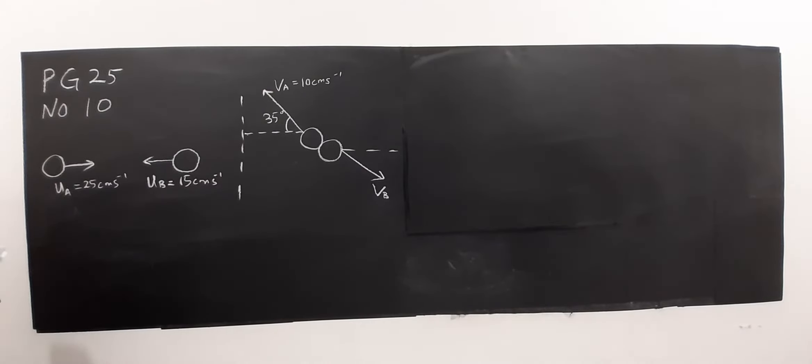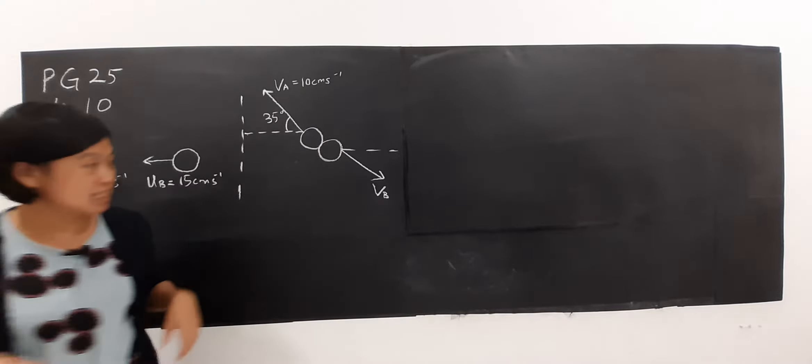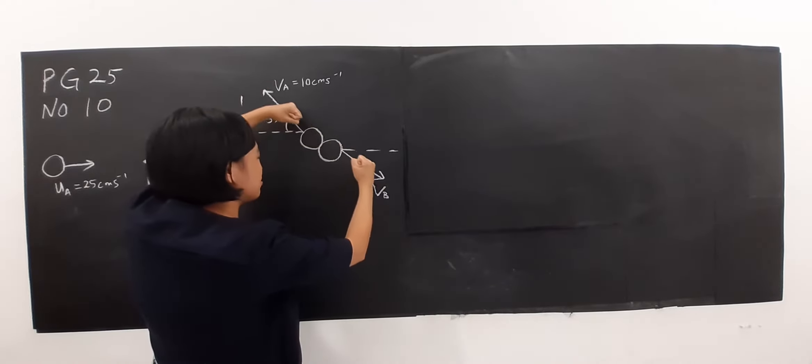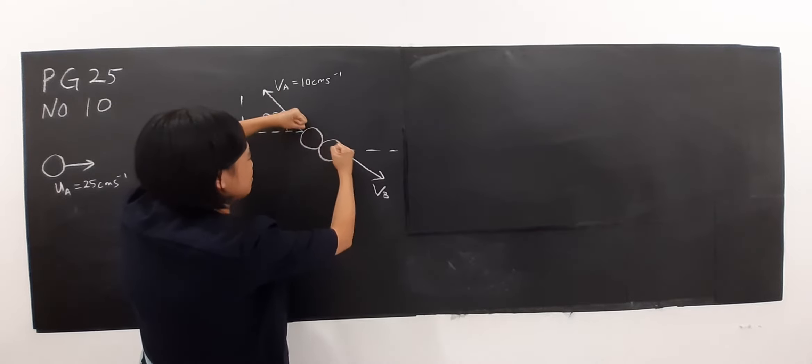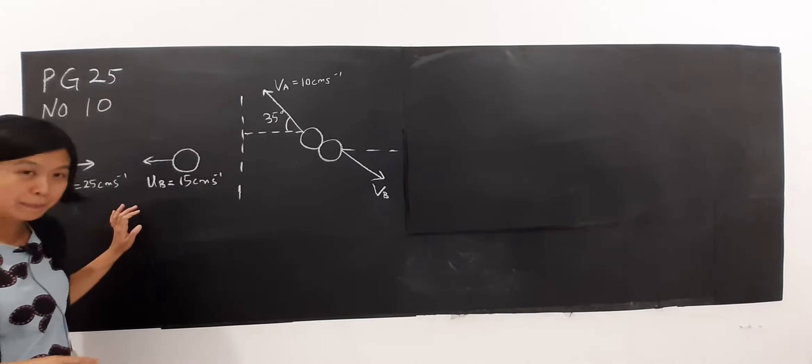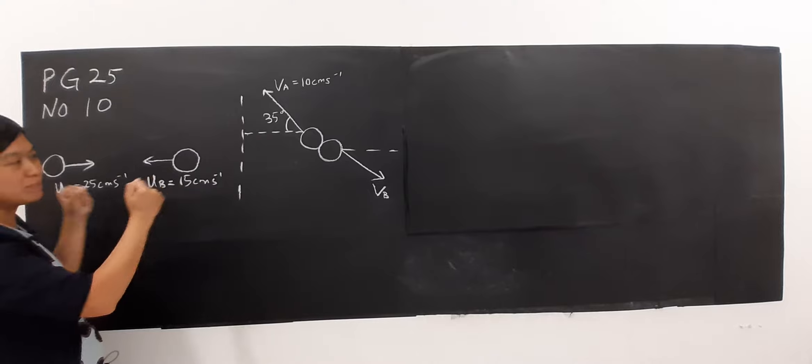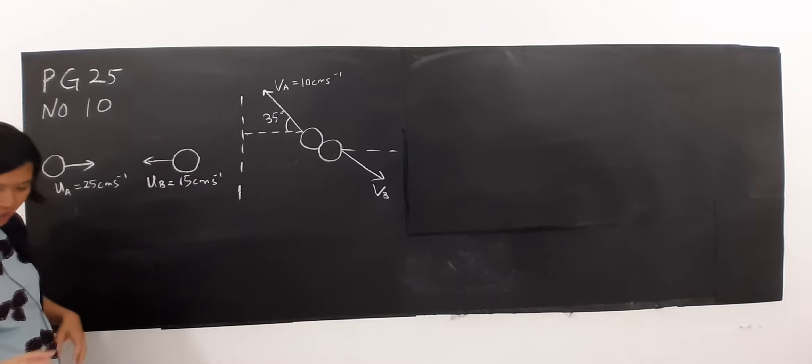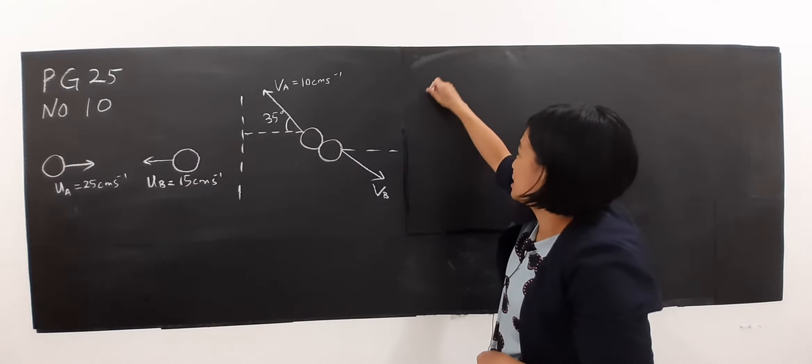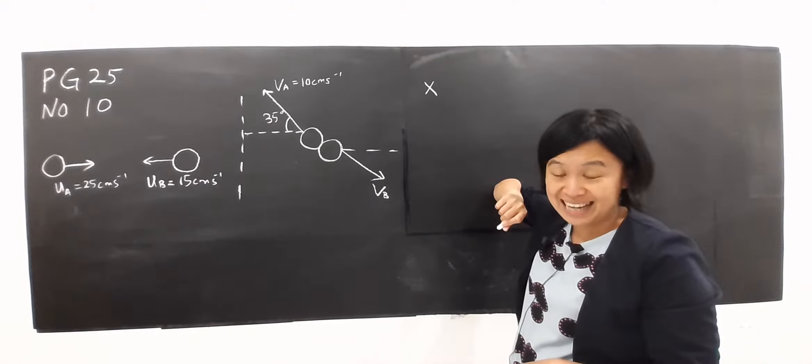First of all you see that these two balls actually collide and after collision, these two balls actually separate and travel with velocity in different directions. Once you see this kind of problem, you find that this collision actually involves two dimensions which has both an x-axis and y-axis.